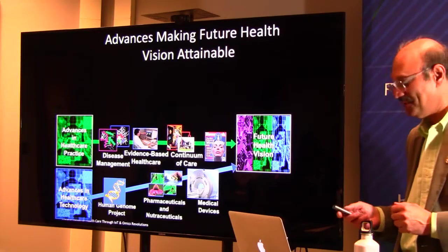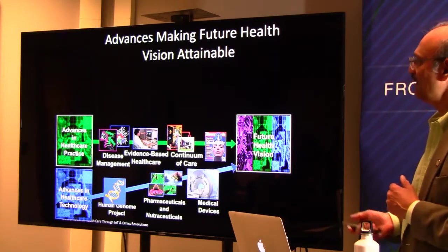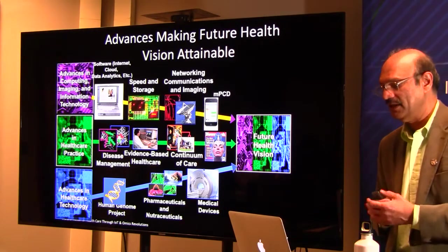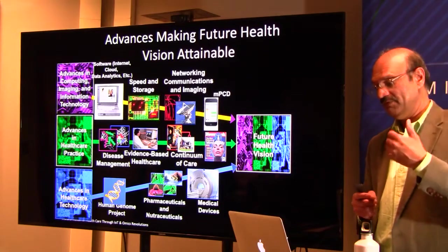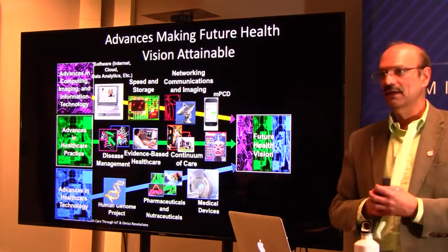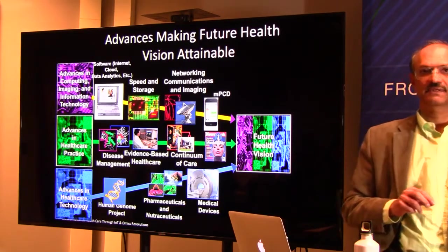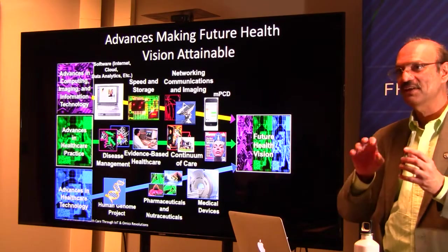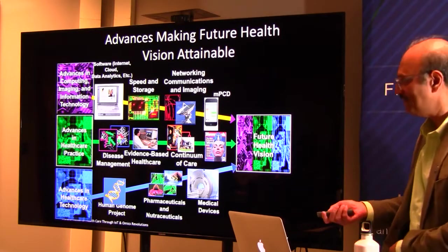Engineered systems also have three dimensions — there are socio-technical systems and also behavioral aspects. Then there are advances in computing, imaging, and information technology: cloud computing, speed and storage becoming faster and cheaper, networking and wireless technologies, and what I call MPCDs — mobile personal computing devices. This smartphone is part of my life right now and will be part of everyone's life.